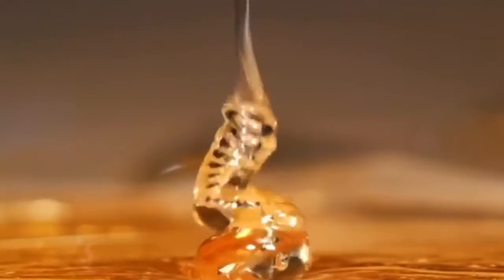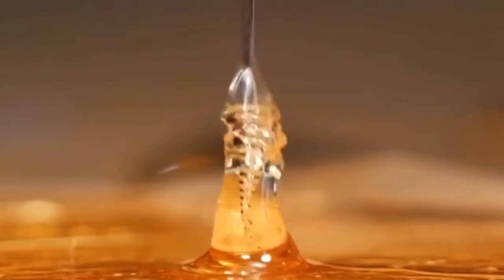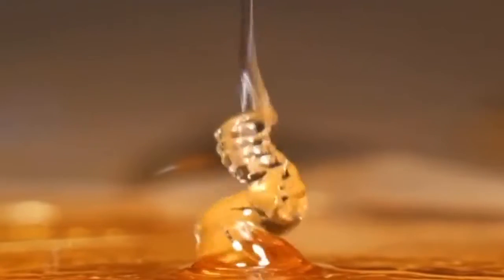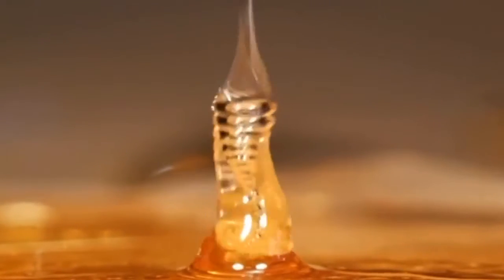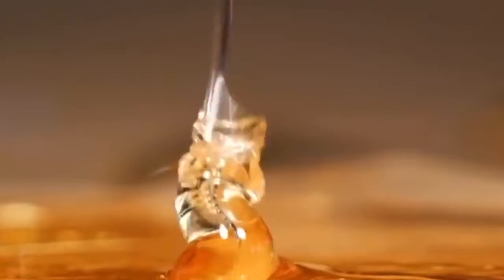Honey has three main tricks for fighting bacteria. The first is all that sugar. Honey is only about 17% water. Most but not all of what remains is sugar. The two main types of sugar in honey are glucose and fructose.